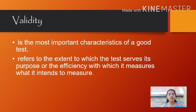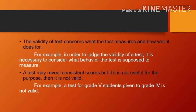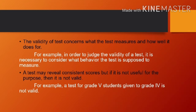If a method is reliable, then it is valid. In contrast, if a method is not reliable, it's not valid. The validity of tests concerns what the test measures and how well it does so. For example, in order to judge the validity of a test, it is necessary to consider what behavior the test is supposed to measure. A test may reveal consistent scores, but if it is not useful for the purpose, then it is not valid. For example, a test for grade 5 students given to grade 4 is not valid.